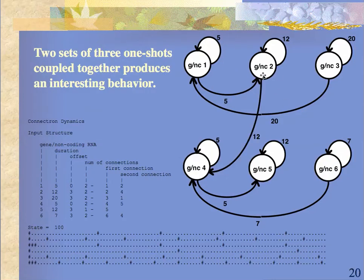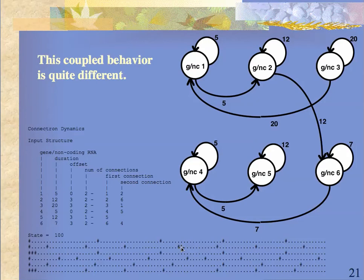If we introduce just one connectron transmission between the upper group and the lower group, the behavior is going to be completely different and much more complex.